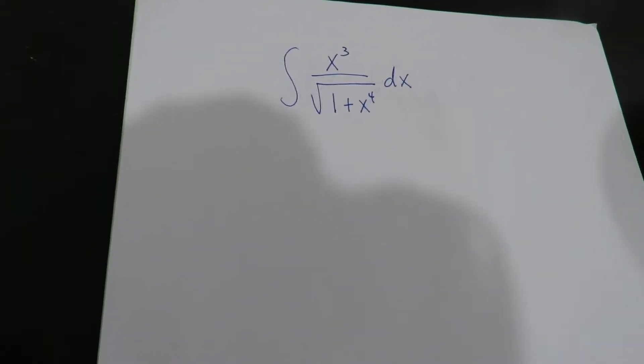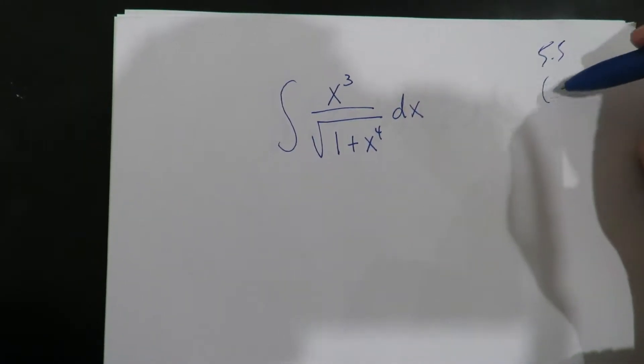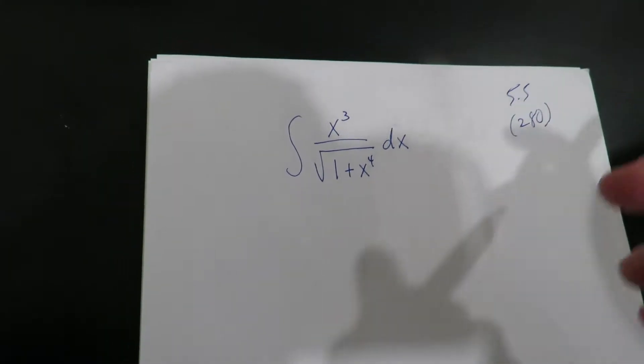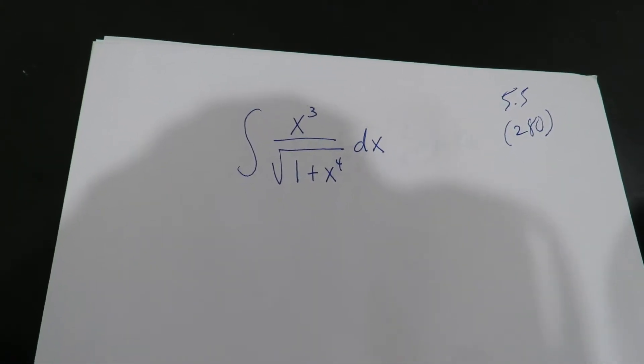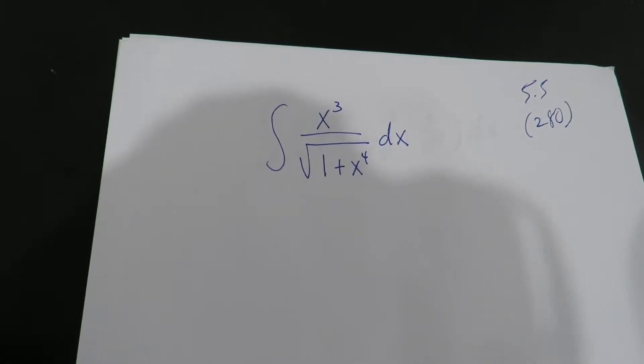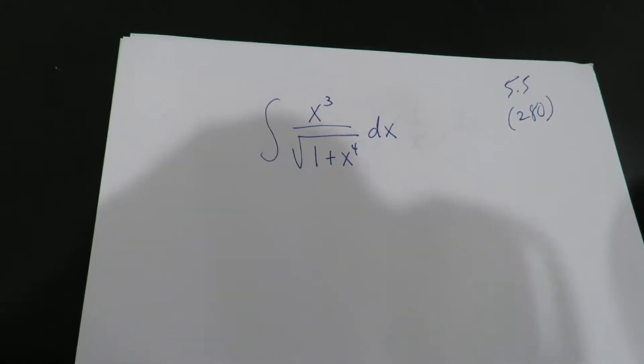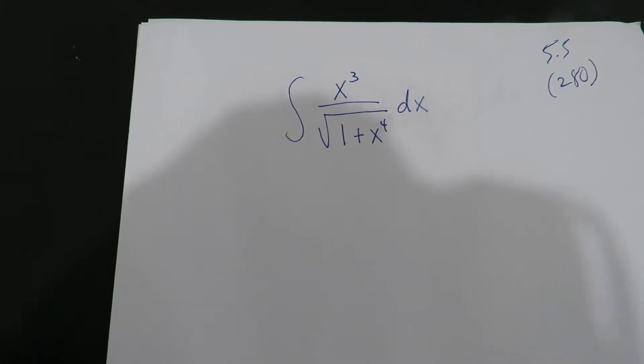Okay, let's try another one. This is u-substitution, section 5.5. U-substitution is the opposite of the chain rule. For integration, there is no product rule, no quotient rule. Those concepts don't work here. You have to use u-substitution to fold it back up into finding the original function.